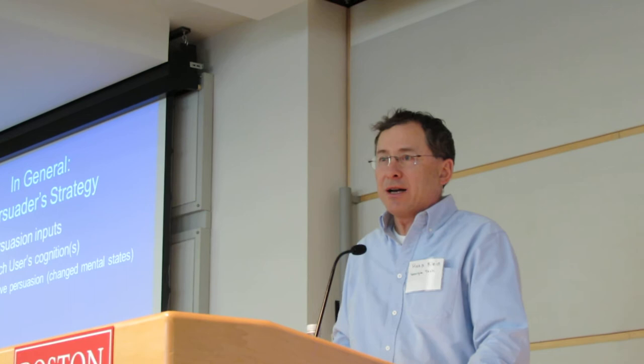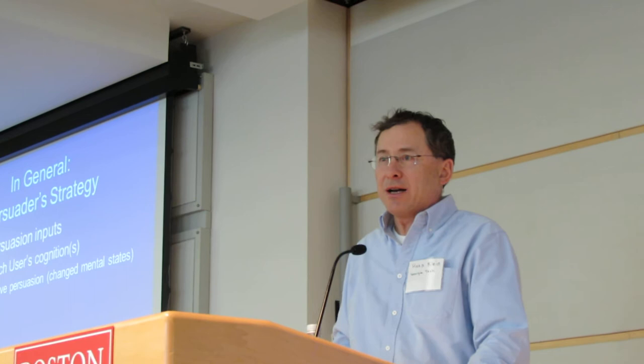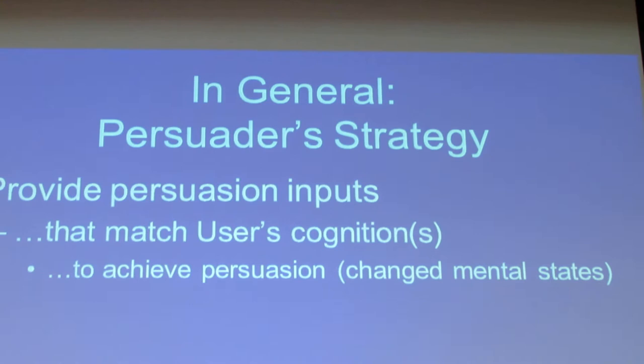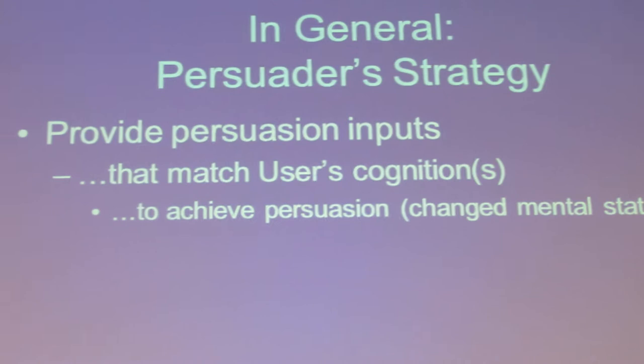So in general, we're still in the dimension of psychology and communications. The persuader's strategy is to provide persuasion inputs to the user that match or fit the user's cognitions in such a way that the user changes their decisions, their opinions, their ethical preferences — what they like and dislike — to achieve persuasion.